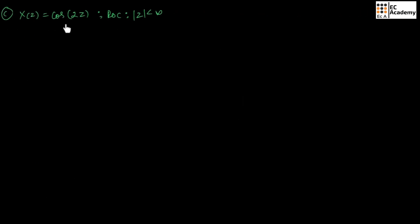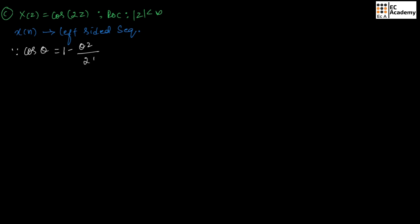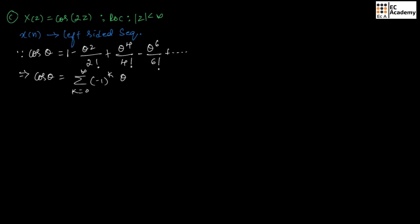The next problem is X of Z equal to cos(2Z) with ROC magnitude of Z less than infinity. Since the ROC is less than infinity, the corresponding X of N is a left-sided sequence. We know that cos(theta) can be expanded as 1 minus theta squared over 2 factorial, plus theta to the power 4 over 4 factorial, minus theta to the power 6 over 6 factorial, and so on.